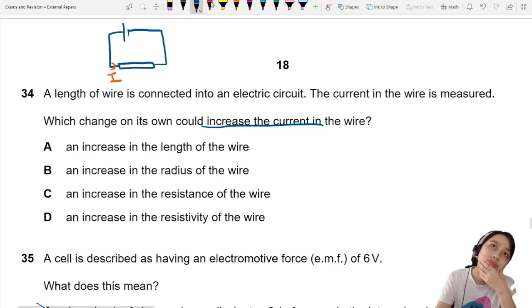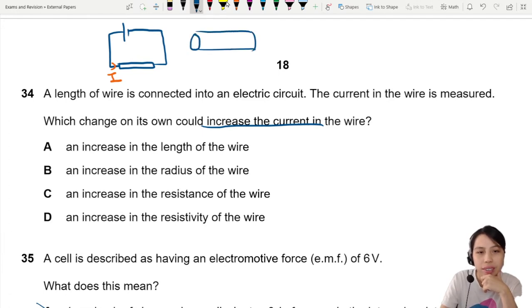We got one main equation for this type of dimension. Imagine a wire is like a cylinder, right? Current in, current out. That would be I equals to NAVQ or NAVE. In this case, electron is flowing.